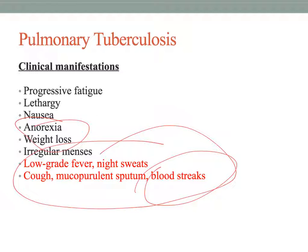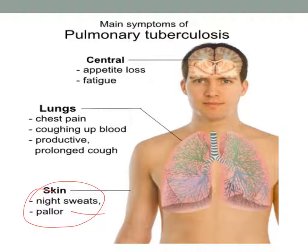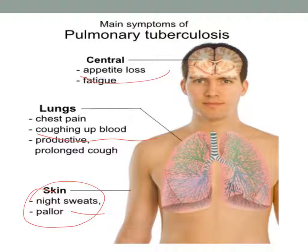At some facilities, healthcare workers use a PAPR or a special mask to avoid exposure to droplets breathed out by patients with active TB. Night sweats are particularly indicative of TB, and coughing up blood, appetite loss, and fatigue are significant symptoms that help distinguish TB from other infectious lung processes.